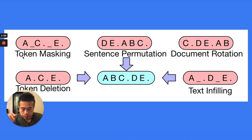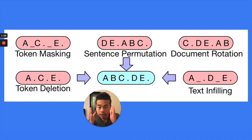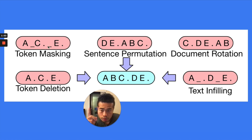You mask 15% of tokens, and the model needs to predict the rest. The original input is A, B, C, D, E and the model also needs to predict A, B, C, D, E. They also have token deletion: randomly delete certain tokens and the model needs to predict which tokens were deleted. The difference between token masking and token deletion is that in token masking, you put a mask token, so the model knows which position got masked. But in deletion, the model has no such information — it must learn which position of tokens got deleted, making it a much harder task.